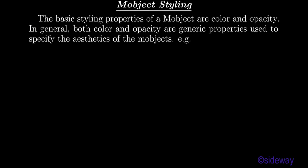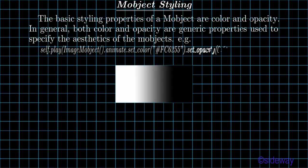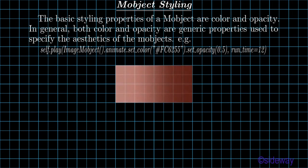Mobject Styling. The basic styling properties of a mobject are color and opacity. In general, both color and opacity are generic properties used to specify the aesthetics of the mobjects. For example: self.play, imagemobject, dot.animate.set_color(#fc6255).set_opacity(0.5), run_time=12.